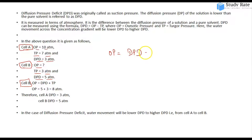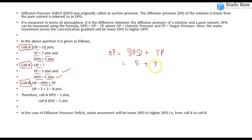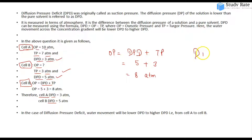Osmotic pressure equals DPD plus turgor pressure. For cell B, DPD value given is 5 atmosphere and TP is 3, so osmotic pressure becomes 8 atmosphere. Cell A has DPD of 3 atmosphere and cell B has DPD of 5 atmosphere.